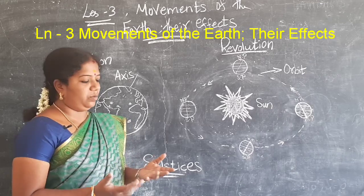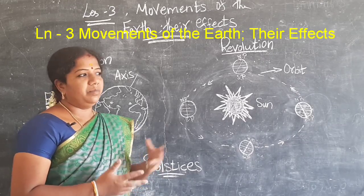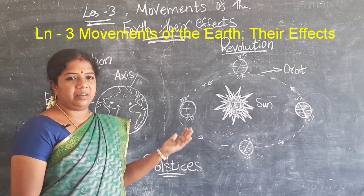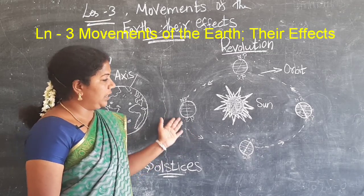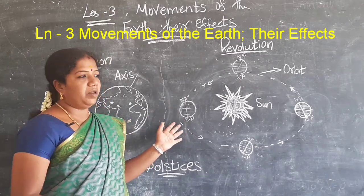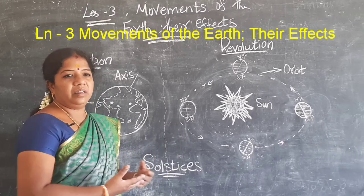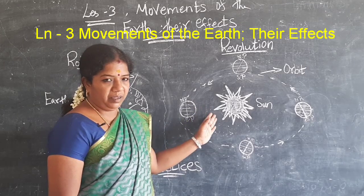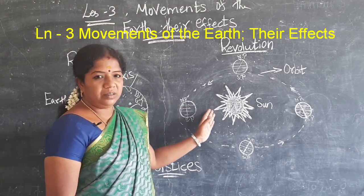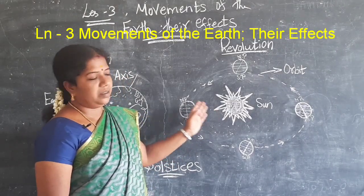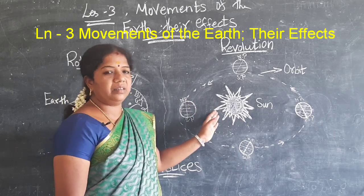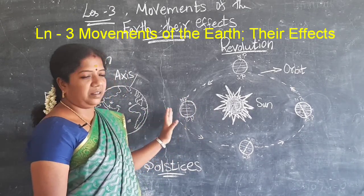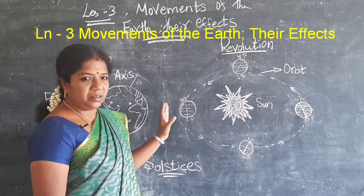What are the causes of revolution? Because of the revolution, we get seasons. If the part of the earth is facing the sun, it is summer season. The other part that is far away from the sun experiences winter season.